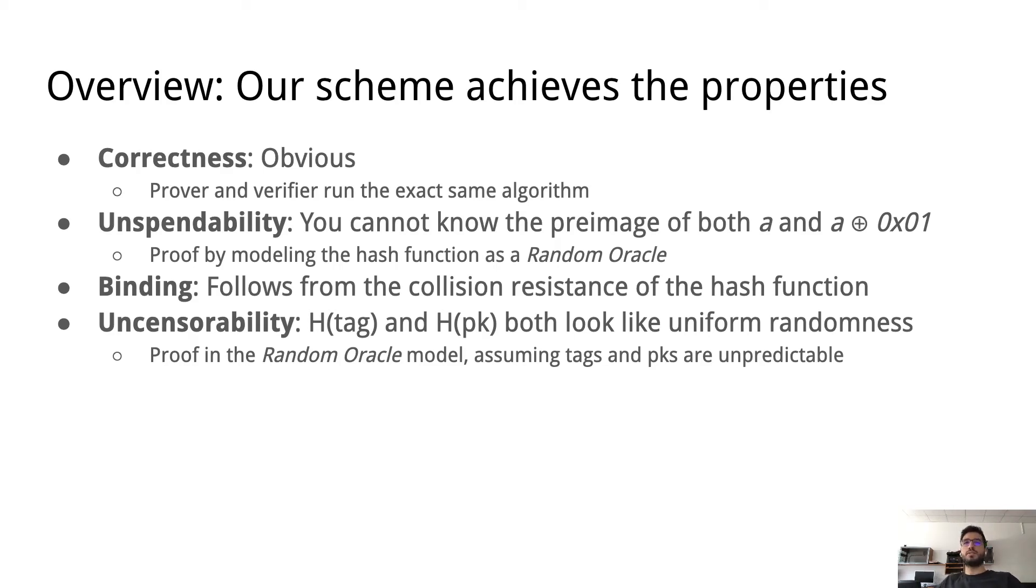Unspendability is basically helped by the fact that we flipped the last bit. It is basically computationally infeasible to know the preimage of both some value a and then this same value but with the last bit flipped. We actually prove this, we have a full proof for this in the paper by modeling the hash function as a random oracle.